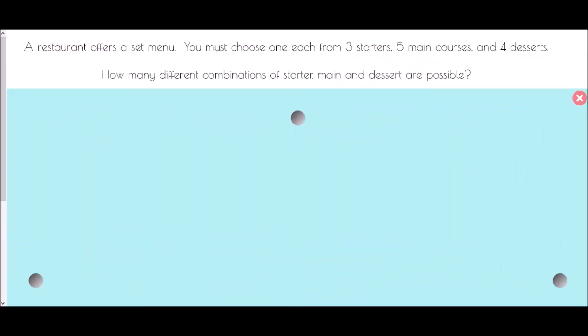Okay so our first question says a restaurant offers a set menu. You must choose one each from three starters, five main courses and four desserts. How many different combinations of starter, main and dessert are possible?